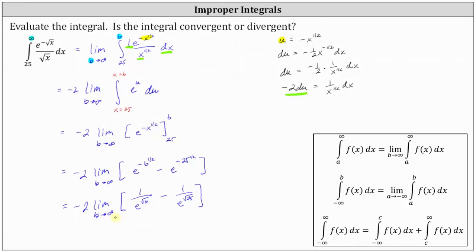As b approaches infinity, one divided by e raised to the power of square root of b approaches zero, because the numerator stays at one while the denominator increases without bound — the exponent on e approaches infinity, so e to the square root of b also approaches infinity. The term one divided by e to the fifth is not affected by b, so we are left with negative two times zero minus one divided by e to the fifth, which equals positive two divided by e to the fifth.